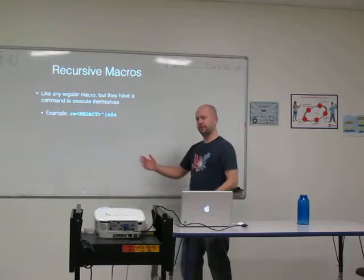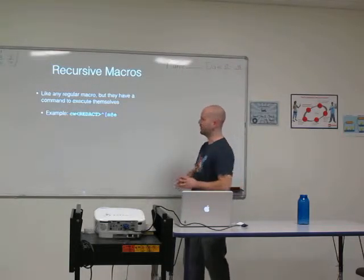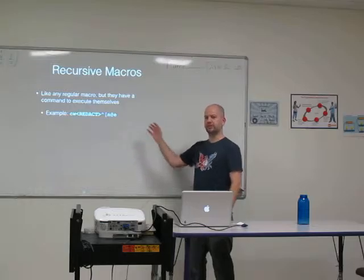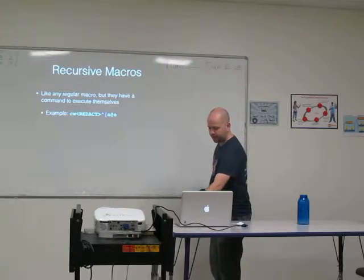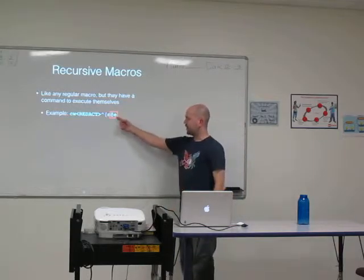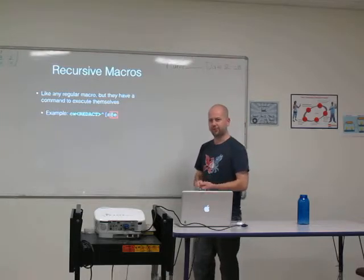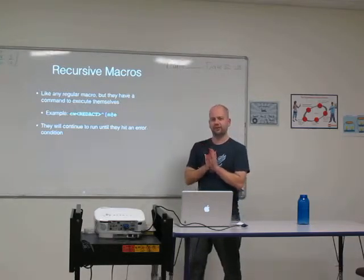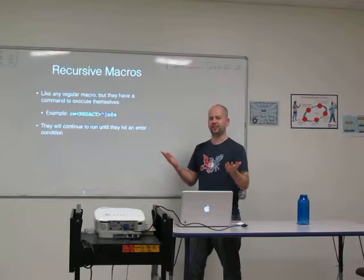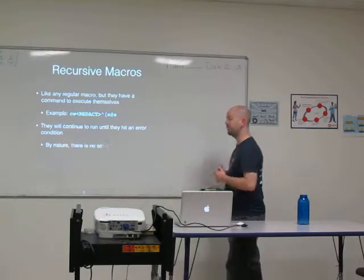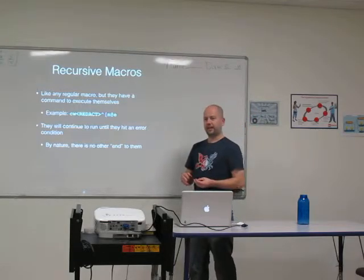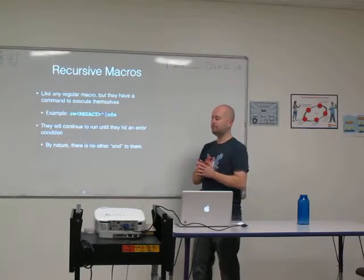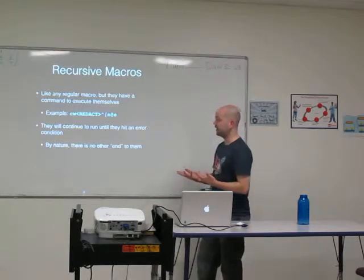Basically it's a command to change whatever the current word is with a redacted value, escape, go to the next search result, and then start over again. So: change the word, jump to a result, change the word, jump to a result, and so on — because we've got the @E at the end. These will continue to run until they hit an error condition, because every single time you hit the end, the very last thing is go back to the beginning — there's no other way for them to end. This is why it's actually good that when it hits an error condition, a macro simply stops and does not rewind itself — because if it didn't, we couldn't have recursive macros.